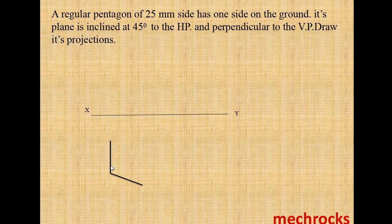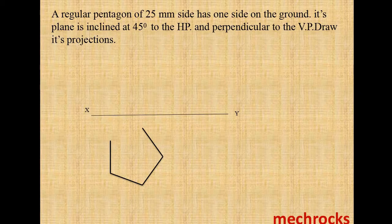Now you draw one more side at an angle of 108 degrees, of length 25mm. Similarly, draw one more side at an angle of 108 degrees, of length 25mm. Similarly draw one more side and one more side also. Like this, you draw all five sides.